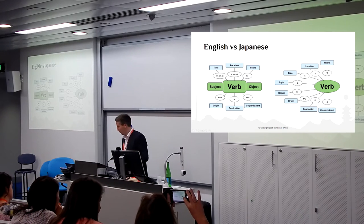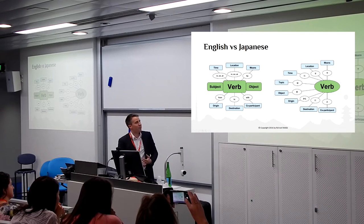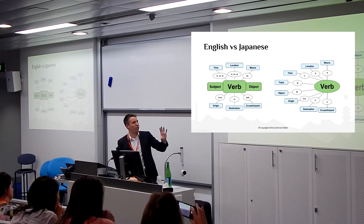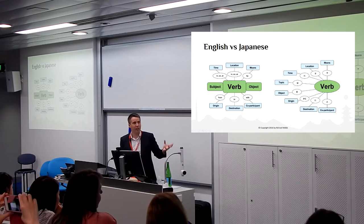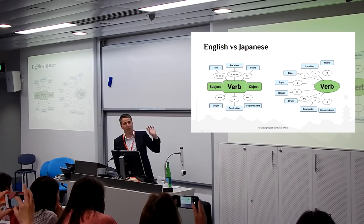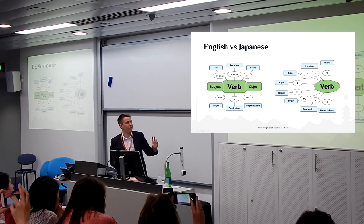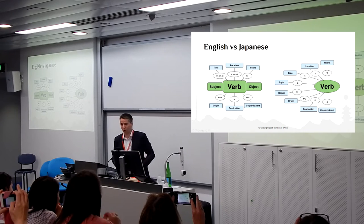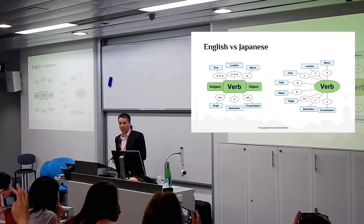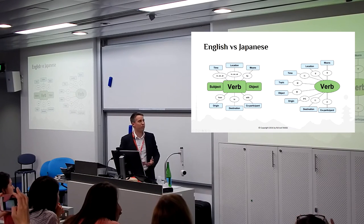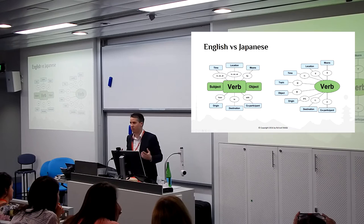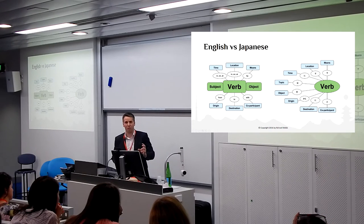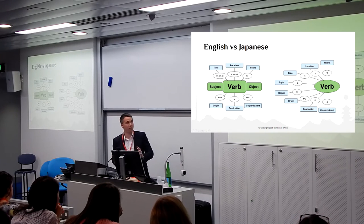That'll take more than the 55 minutes I have. But if we assume for now that subject and topic are the same thing, the way that information relates to the verb — in English it's 100% based on word order. We know what the subject is based on the fact that it comes before the verb. Whereas in Japanese, the only thing that determines that is the particle, and word order is nowhere near as important.